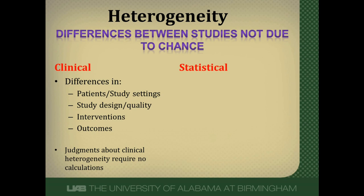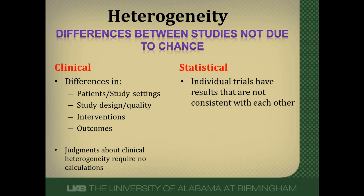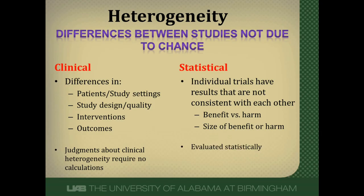Statistical heterogeneity is not always present. In statistical heterogeneity, individual trials have results that aren't consistent with each other — some studies show benefit while others show harm. Or even if all studies show benefit or harm, the size of that benefit or harm is different. In this case, it has to be evaluated statistically to see if statistical heterogeneity is present.